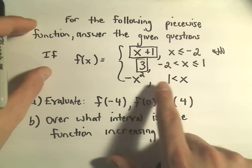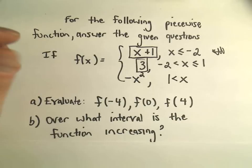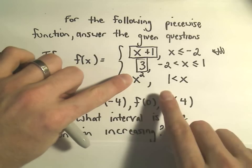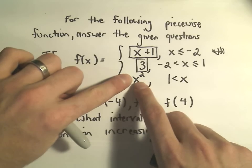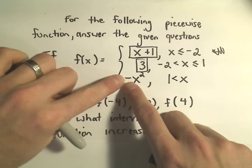For x greater than 1, if you think about plugging in 2, 2 squared would be 4, but then we get negative 4.